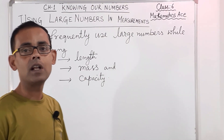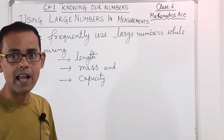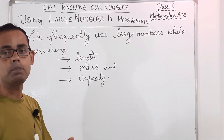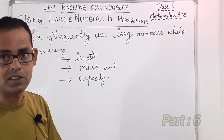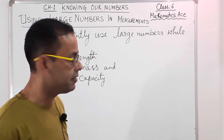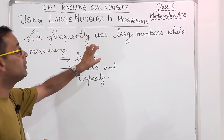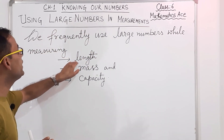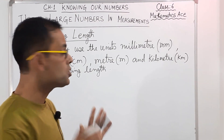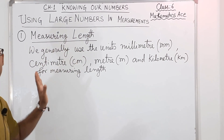Now students of class 6, today we are going to focus and understand the concept of using large numbers in measurements. Today's part is part 6 — it is a continuing class and before this we have completed till part 5. We are going to understand how large numbers are used for measuring length, mass, and capacity. The first one is measuring length.